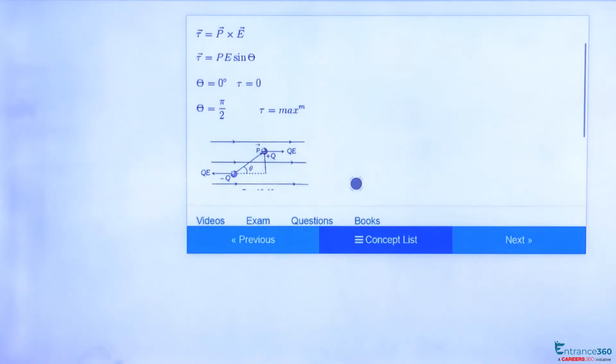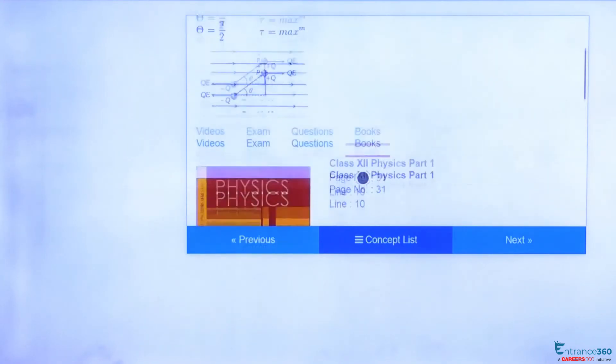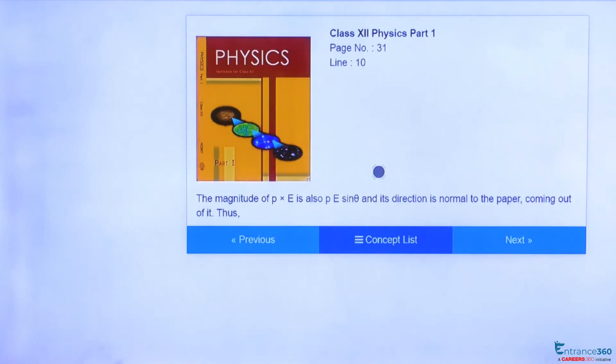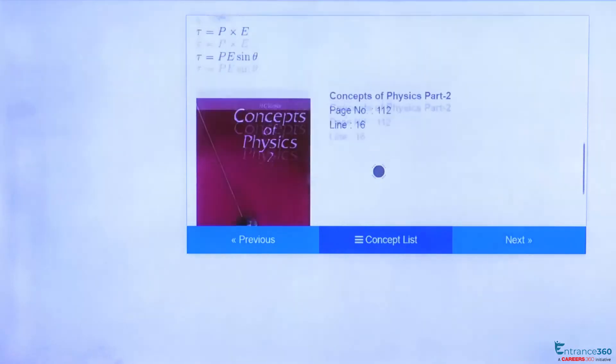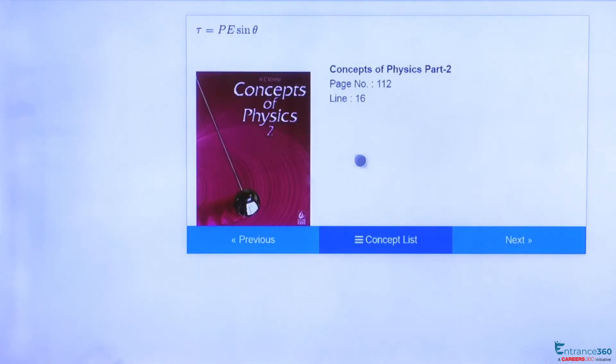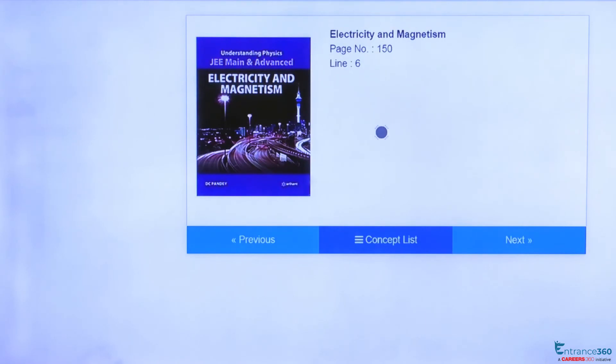You can also follow the reference books. You will get this concept in NCERT's class 12 physics part 1 book at page 31 and line 10. And in S.C. Verma's part 2 you will get this concept at page number 112 at line 16. And in DC Pandey's electricity and magnetism book you will get this concept at page number 150 at line 6.